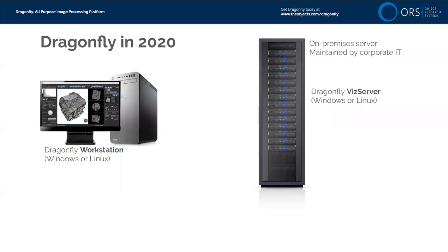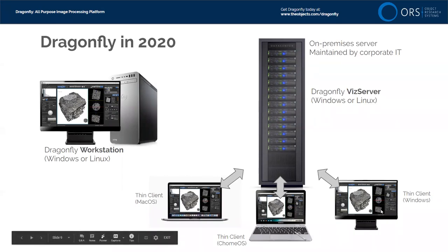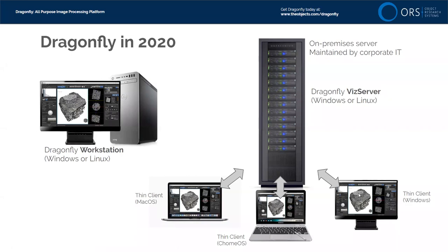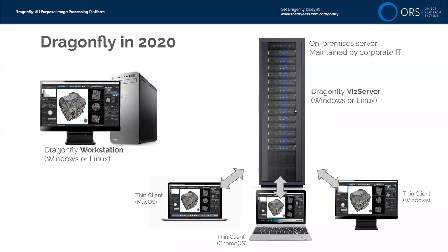Starting in 2020, instead of installing Dragonfly on a workstation, you can install it on a server — what we call a Viz server. It would normally be maintained by your IT department on premises. Different users can connect and run Dragonfly at the same time, though Dragonfly is actually running on the server. You have the experience like it's running on your own computer, and your local machine just needs a web browser — it could be a MacBook, Chromebook, or regular desktop. This allows you to invest in a server, support multiple users simultaneously, and upgrade Dragonfly in one place.